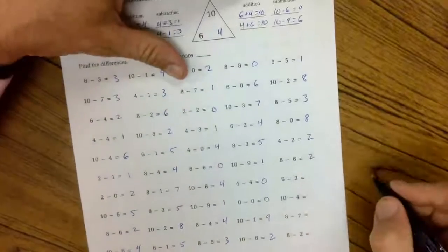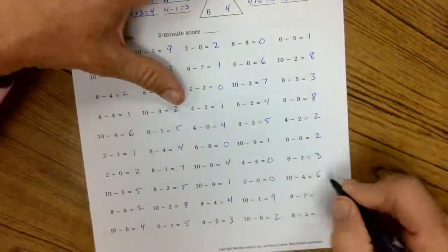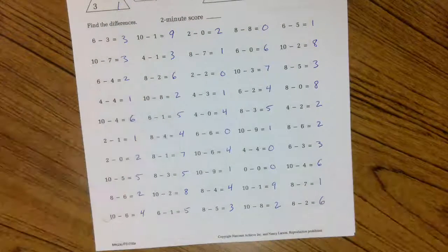6 minus 8 is 2. 6 minus 3 is 3. 10 minus 4 is 6. 8 minus 7 is 1, and 8 minus 2 is 6.